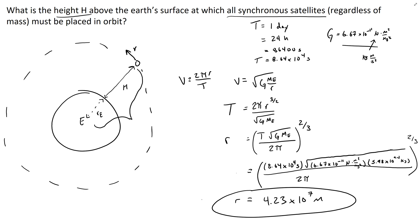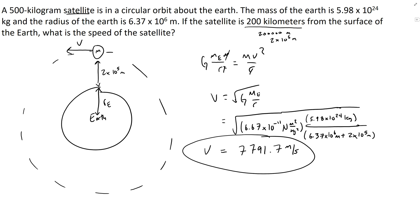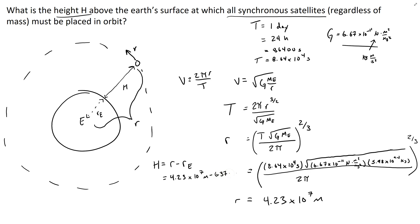To find the height h, we recognize that r equals r_e plus h. So h equals r minus r_e. That's 4.23×10⁷ m minus the radius of the Earth, which is 6.37×10⁶ m. This gives a height of 3.59×10⁷ meters, which is roughly about 22,000 miles.